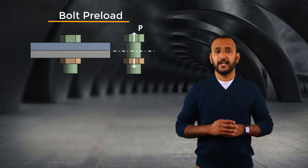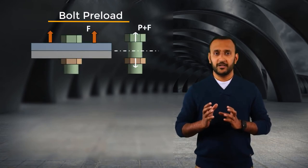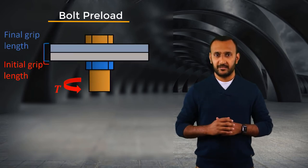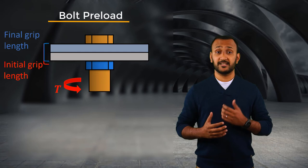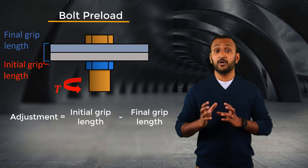Starting with bolt preload. The preload in the bolt can change due to operational loads. It's important to monitor this quantity because success of most designs depend on it. When a bolt is preloaded, its grip length changes and this change is called adjustment. Measuring the preload and the adjustment depends on how the bolt preload is defined.